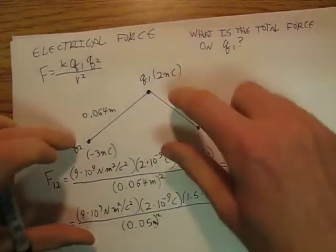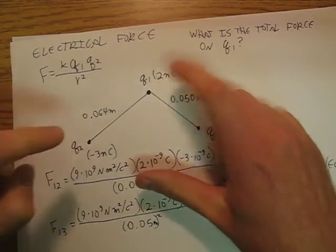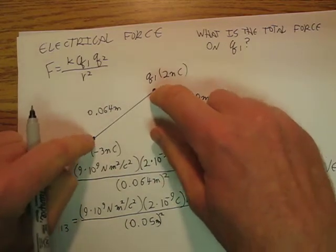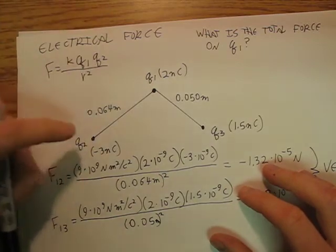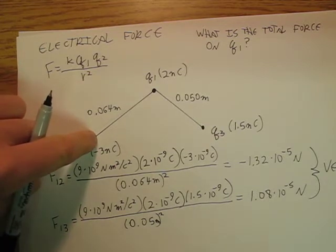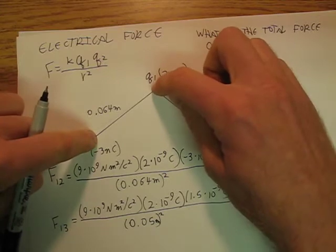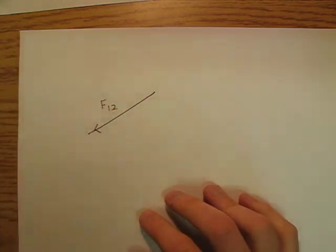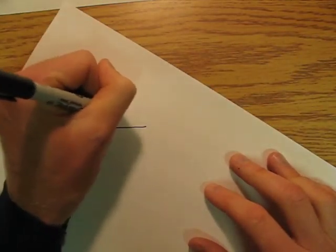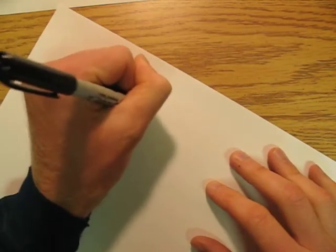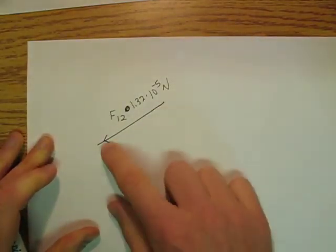Since Q1 and Q2 have opposite signs, this one's positive, this one's negative, Q1 and Q2 are going to attract each other. So suppose I just put my finger down on Q2 so it can't run away. Which way is Q1 going to move just because of Q2? Well, it's going to move that way. So my force vector is going to go that way with a value of 1.32 times 10 to the negative 5th newtons. I don't need the negative anymore because I'm handling that with the direction of my vector.